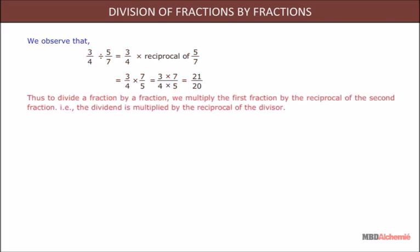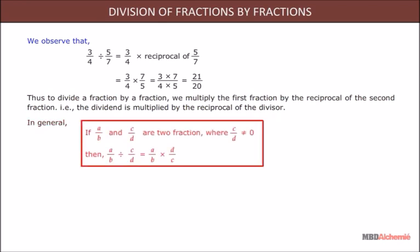To divide a fraction by a fraction, we multiply the first fraction by the reciprocal of the second fraction — that is, the dividend is multiplied by the reciprocal of the divisor. In general, for two fractions A/B and C/D where C/D ≠ 0: A/B ÷ C/D = A/B × D/C.